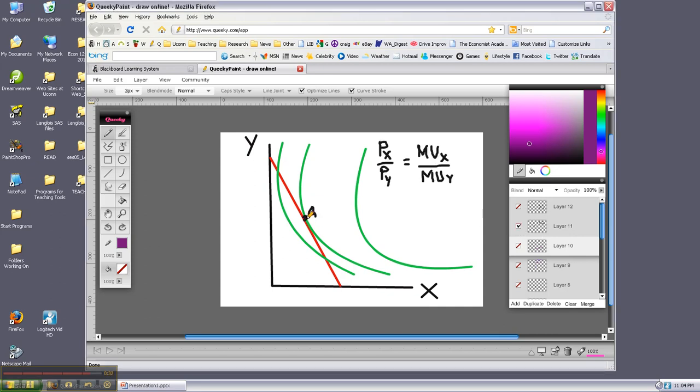Here's our point of equilibrium, A. And we know that these lines are tangent, the red and the green. And so the slope of the red line is Px over Py, and the slope of the green line is the MRS or marginal utility of X over the marginal utility of Y.